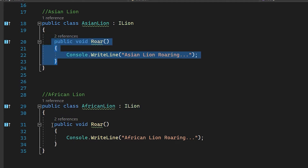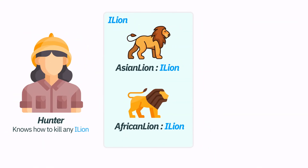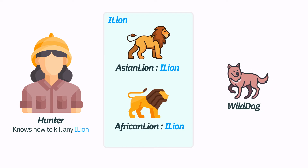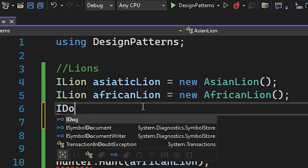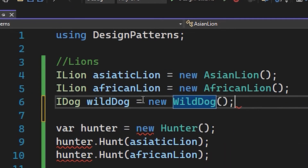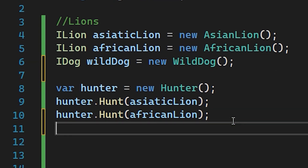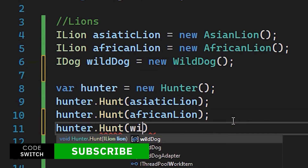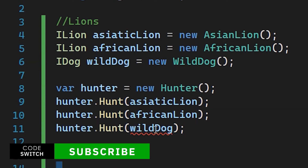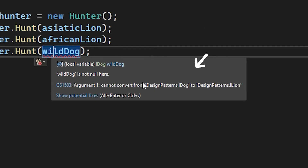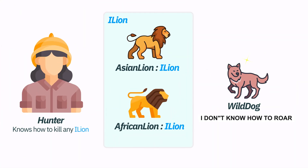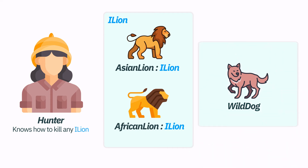Now let's say tomorrow a wild dog comes into the picture and we need to hunt it along with the other lions. But our hunter only knows how to hunt lions, not wild dogs. This is because a wild dog is not a lion — it doesn't have a roar method and therefore cannot implement the ILion interface.